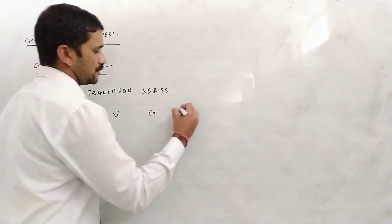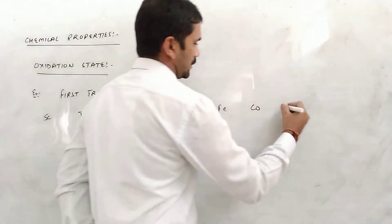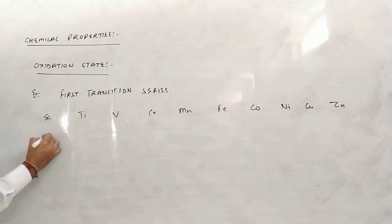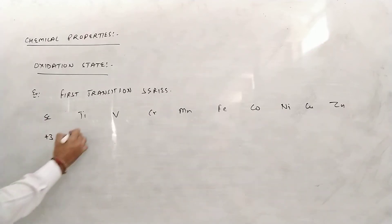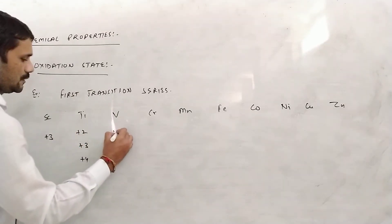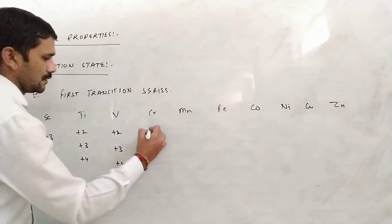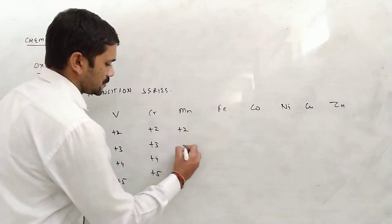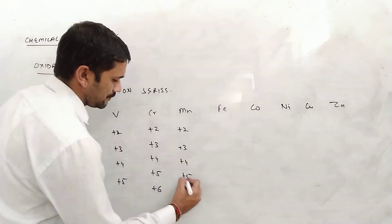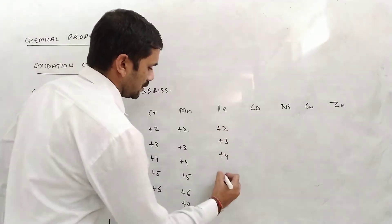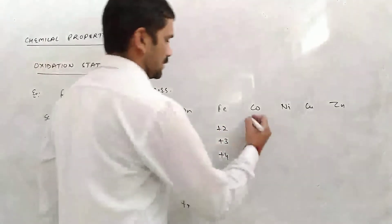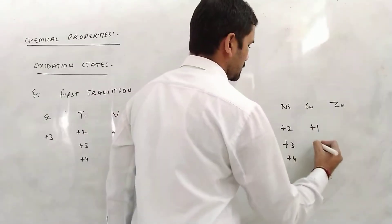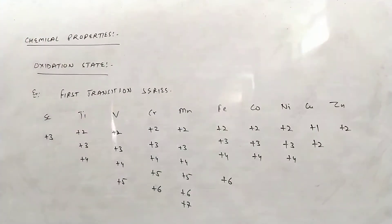In the first transition series: Scandium shows +3 oxidation state. Titanium shows +2, +3, +4. Vanadium shows +2, +3, +4, +5. Chromium shows +2, +3, +4, +5, +6. Manganese shows +2, +3, +4, +5, +6, +7. Iron shows +2, +3, +4, +6. Cobalt shows +2, +3, +4. Nickel shows +2, +3, +4. Copper shows +1, +2. And zinc shows +2 oxidation state.